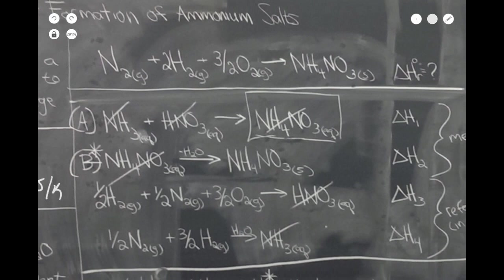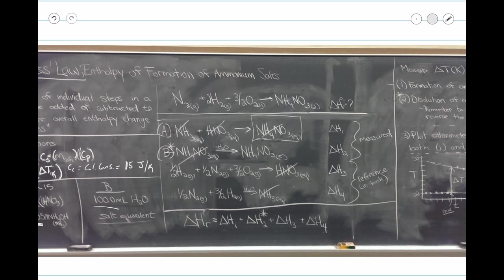Here's an example of a chemical reaction we'd like to study but can't test directly in the lab — we don't know the ΔH_r for the reaction of nitrogen gas, hydrogen gas, and oxygen gas to make ammonium nitrate. Instead, in the lab we're going to perform two reactions: NH3 plus nitric acid goes to ammonium nitrate (NH4NO3), giving us ΔH1. We also have ammonium nitrate (NH4NO3, aqueous) converting to the solid form, giving us ΔH2, because we want to make the solid, not the aqueous form.